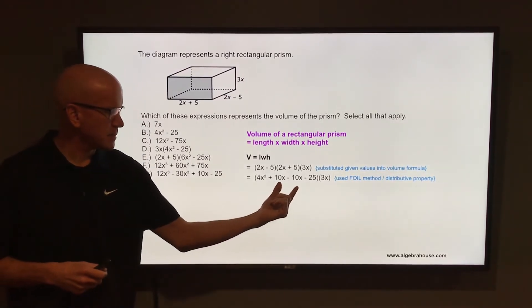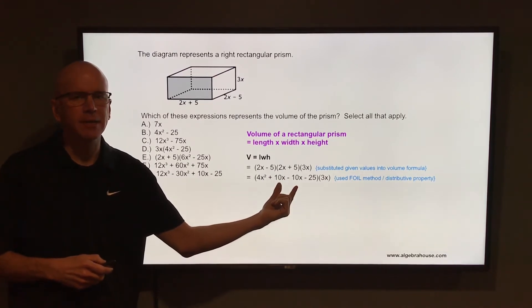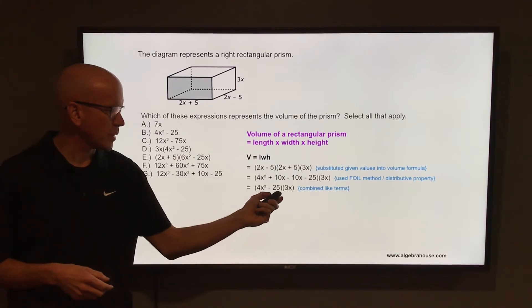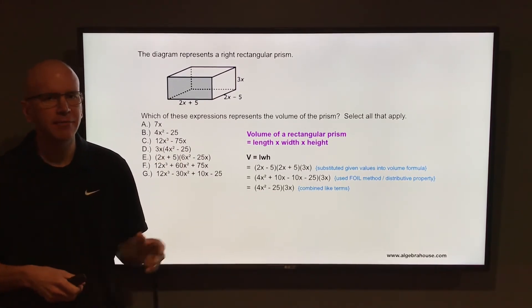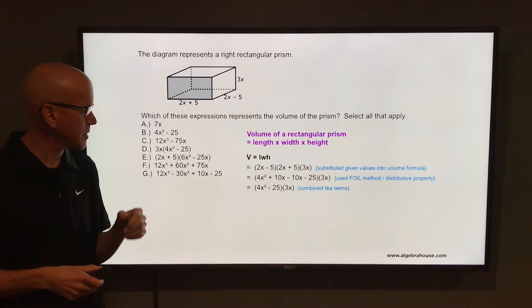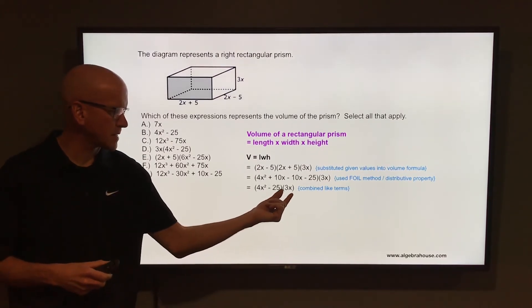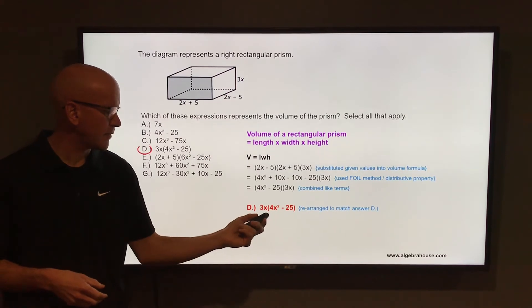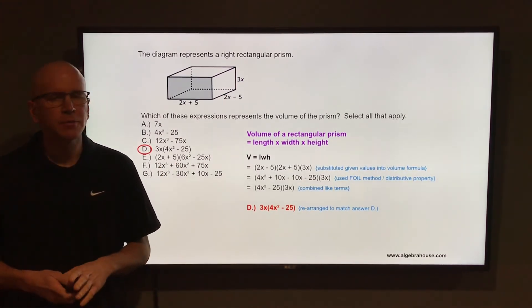Inside the parentheses, combine the like terms, 10x and negative 10x. If you combine those, that would just be zero. So we have 4x squared minus 25 times 3x. Keep an eye on your answer choices. See if that matches any of those answers. Well, if you move that 3x out to the front, it'd be 3x times 4x squared minus 25, and that would match answer D.